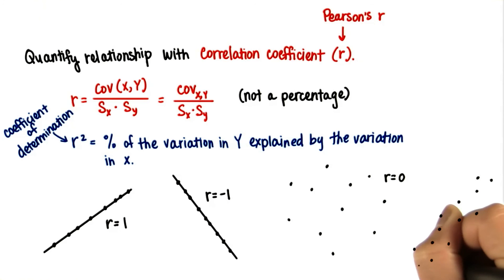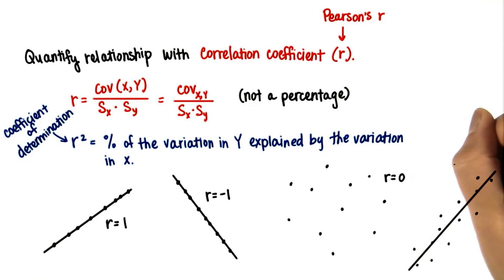Usually data will not fall along a straight line, but sometimes it comes pretty close. And then r in this case might have a correlation coefficient of 0.8, which is actually pretty high.